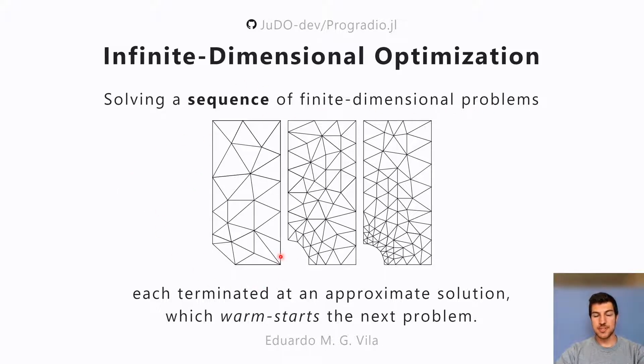We start with a coarse approximation and then we switch to finer and finer approximations. Each of these problems are initialized with the solution from the previous problem, that is what we call warm starting, and it is very important that we can terminate these problems at some desired state in order to have an efficient solution.